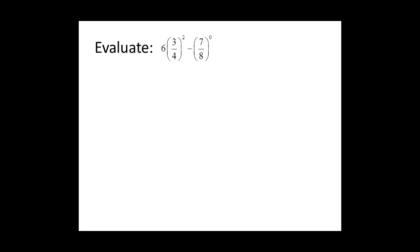Evaluate 6 times 3 fourths squared minus 7 eighths to the zero power. We need to remember our order of operations. We start with parentheses. There's nothing to simplify inside the parentheses, so that step we don't need to do.